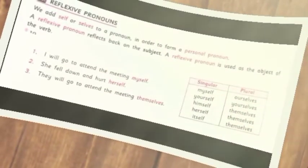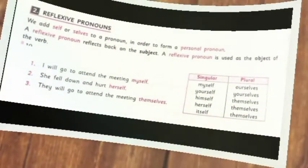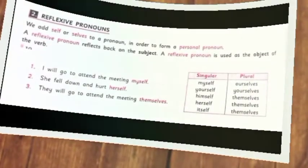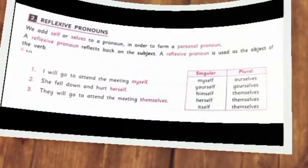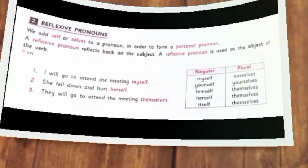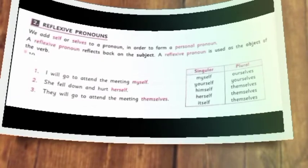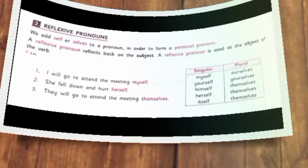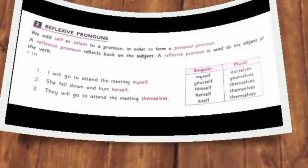Second, we have reflexive pronouns. A reflexive pronoun is a pronoun which reflects back on the subject. It is used as the object of the verb. To form a reflexive pronoun, we add 'self' or 'selves' to a pronoun. For example: 'I will go to attend the meeting myself.' 'They did not work themselves' — meaning they did the work and not anyone else. A reflexive pronoun is used after the verb.